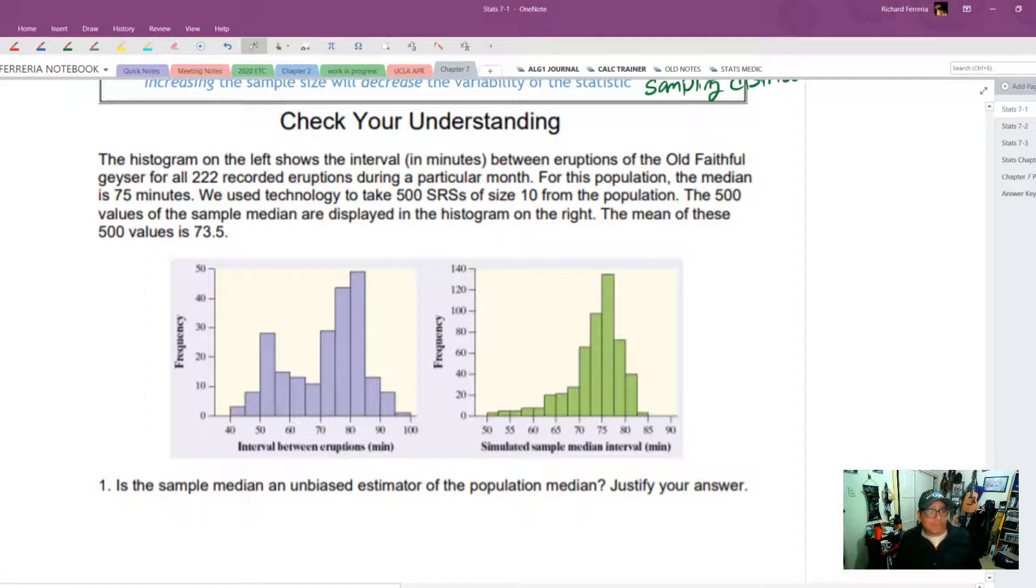The histogram on the left shows the interval between eruptions of Old Faithful recorded for 122 eruptions during a particular month. Wow, that's a lot. For this population, the median was 75. And we use technology to take 500 SRSs of size 10 from this population. The mean of these 500 was 73.5.